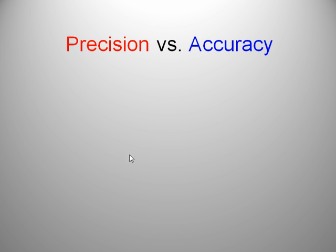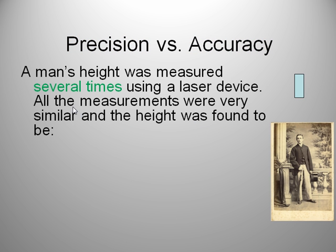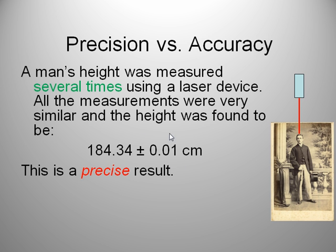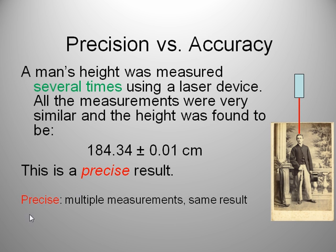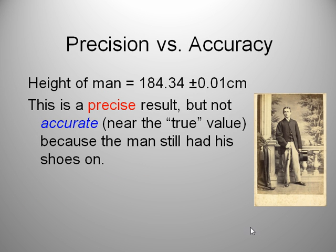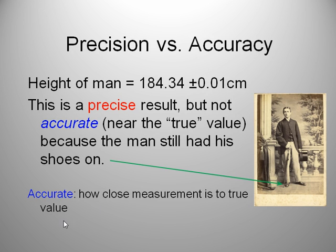Precision versus accuracy, what is that? They do have a meaning. Are they the same thing? No, they're not. Let's take an example here. We have a person, and we're going to measure his height using some kind of high precision laser device. All these measurements would be very similar, and the height was found to be 184.34 plus or minus 0.01 centimeters. Since we have such a small uncertainty here, we can call this result very precise. That is, all the measurements we took were very close to the same number. It doesn't really matter what that number is, they're all the same. So we call that high precision. Multiple measurements, same results.